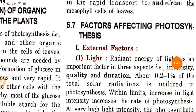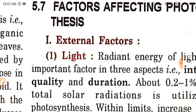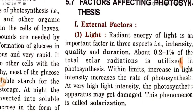Now, there are some factors affecting photosynthesis. The first external factor is light. Radiant energy of light is an important factor in three aspects: intensity, quality, and duration. About 0.2 to 1% of the total solar radiation is utilized in photosynthesis — a very small amount. Within limits, increase in light intensity increases the rate of photosynthesis. At very high light intensity, the photosynthetic apparatus may get damaged. This phenomenon is called solarization.